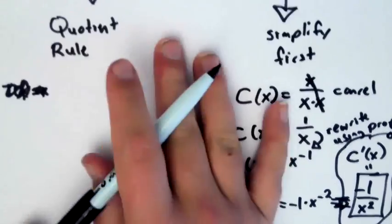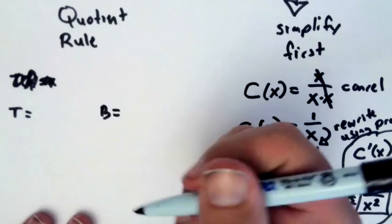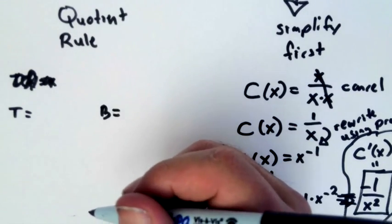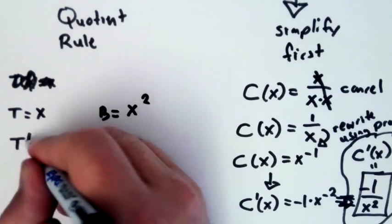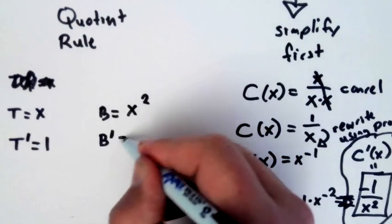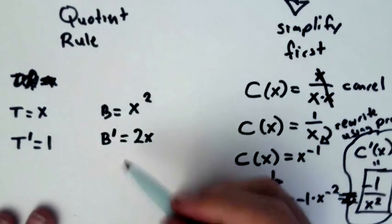T and B are popular. So you can do top and bottom because then you don't have to remember what's f and g. So T is equal to x, B is equal to x squared, T prime is equal to one, and B prime is equal to two.